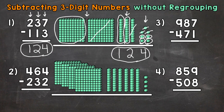Let's try another one and move on to number two. So we have four hundred sixty-four minus two hundred thirty-two. Starting with four hundred sixty-four, and we are subtracting or taking away two hundred thirty-two. We have four hundred sixty-four represented by base-10 blocks: a four in the hundreds place — we have four hundreds; a six in the tens — we have six tens; and then a four in the ones — we have four ones.